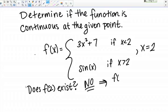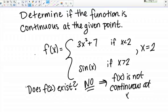Therefore, f of x is not continuous at x equals 2, because it fails one of the criteria for continuity.